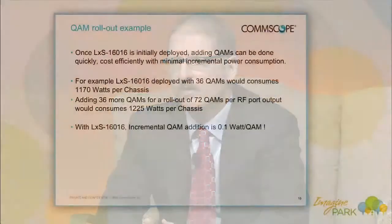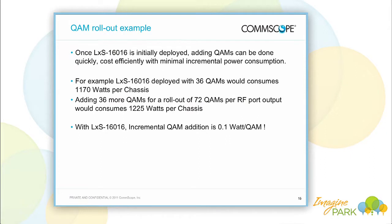Here's a concrete example. A customer deploys 36 QAMs in a service group — pretty common right now — a mix of video on demand, switched digital video, and DOCSIS traffic. We based this on one of our large tier-one customers. That would be 1,170 watts for that chassis, which is 16 service groups — about 2 watts per QAM. If we added another 36 QAMs, doubled the capacity — increased video on demand, DOCSIS, and rolled out a new IPTV service, which a lot of our customers are doing right now — the incremental would be just an additional 0.1 watts per QAM.